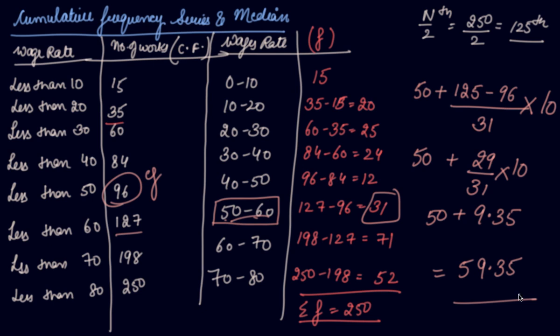This is how you find your median if you are given with the cumulative frequency series. If it was given more than, then the more than value you had to find out. The cumulative frequency was given in the case of more than also. Find out the frequency and the wage rate in the order of class intervals. Now, putting the same formula, you can find out your median value.